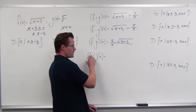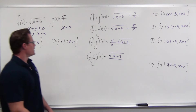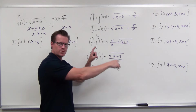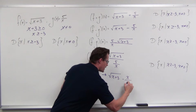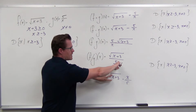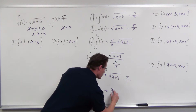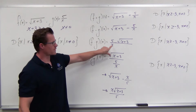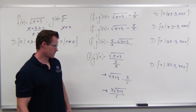Now for division, we have to be conscious of order because division is not commutative. So we put square root of x plus 3 on the numerator and 5 over x on the denominator. When dividing fractions, we multiply by the reciprocal — so this is the same as square root of x plus 3 times x over 5. The resultant function of dividing f by g is x times the square root of x plus 3, over 5.